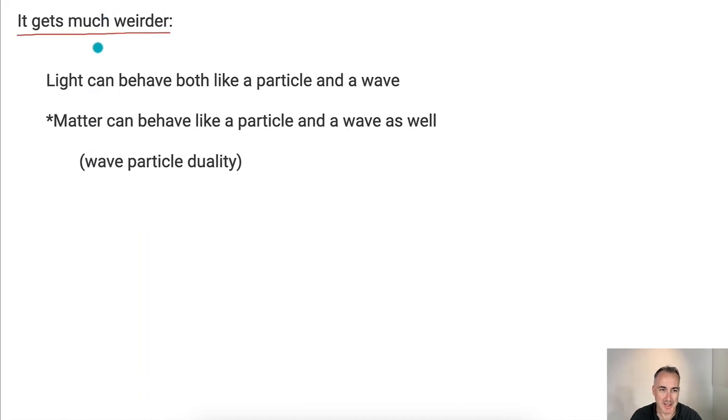And it actually gets even weirder, because although light can behave both as a particle and a wave, turns out matter can behave like a particle and a wave as well. So like an electron, for example, of course it acts like a particle. We expected that. But it turns out electrons can also diffract. In other words, electrons can interfere with themselves. We don't quite understand what's going on there. It's weird, isn't it? But matter can actually behave like a wave as well. So this is called the wave-particle duality, and it's weird.